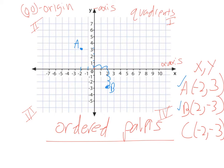And C would be negative 2, 1, 2, and then negative 3, 1, 2, 3. Put a point there, and that would be C.